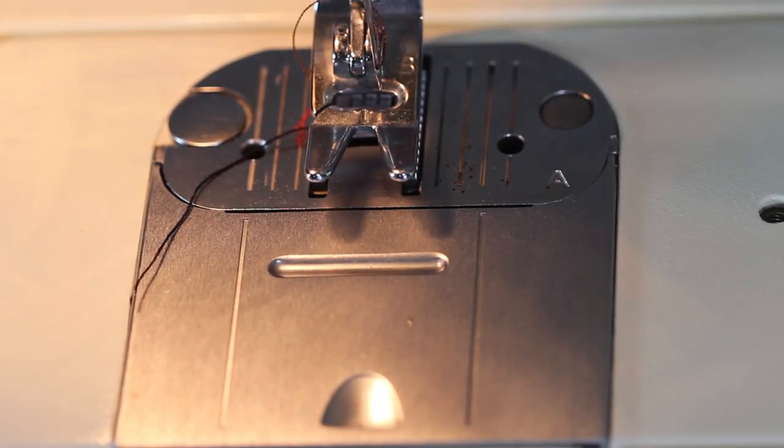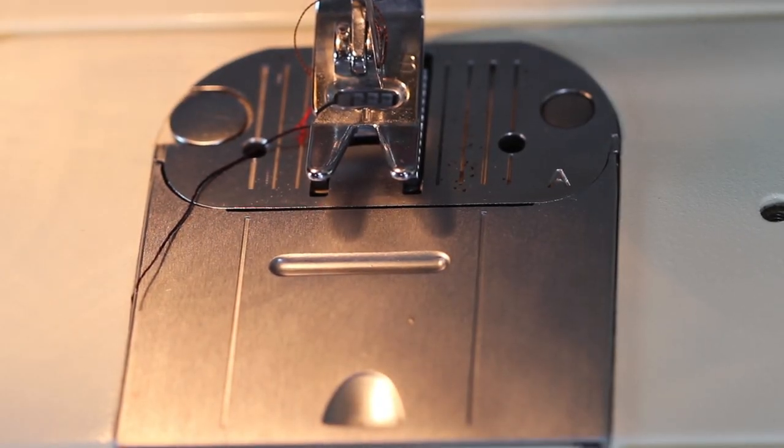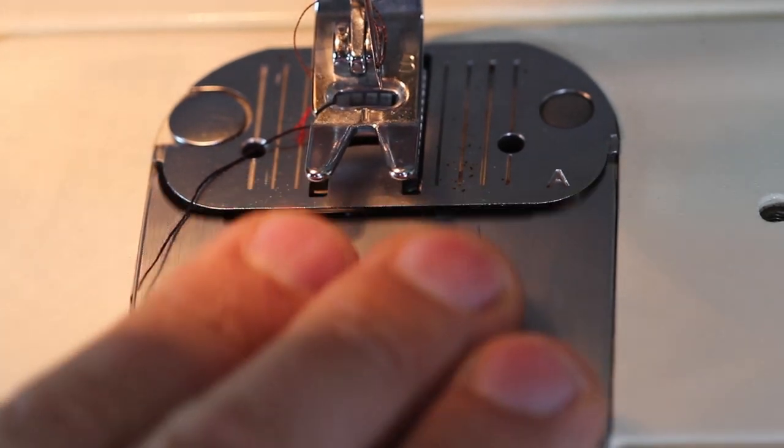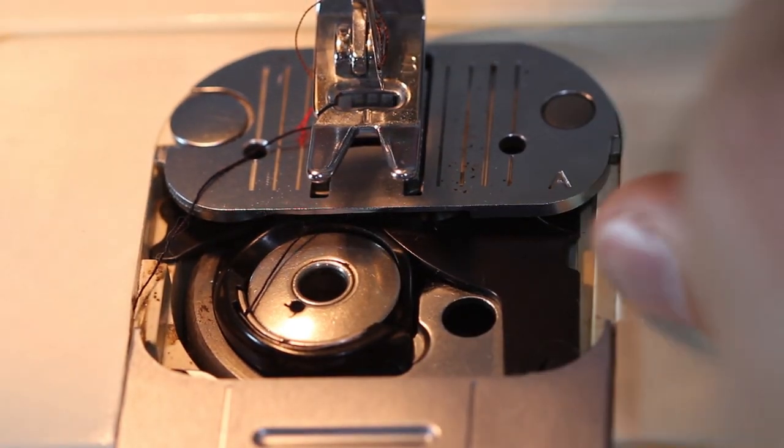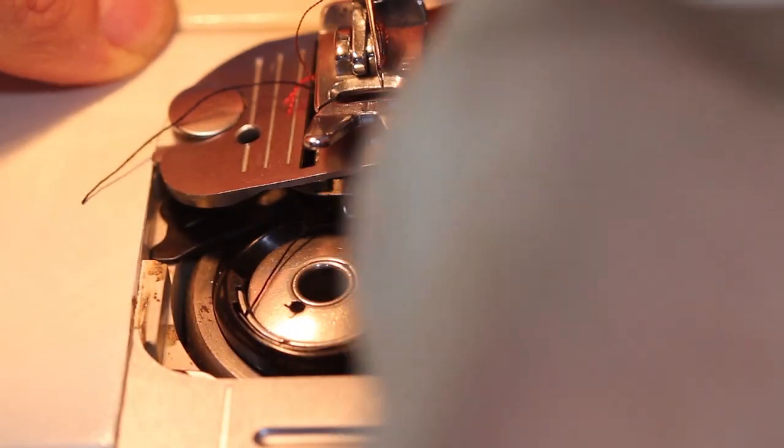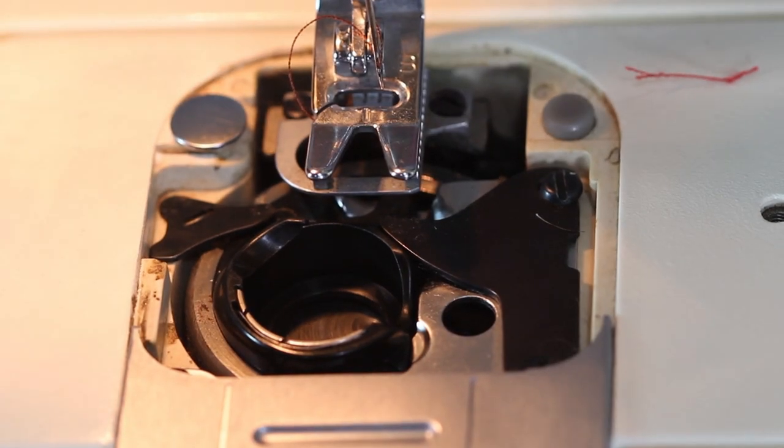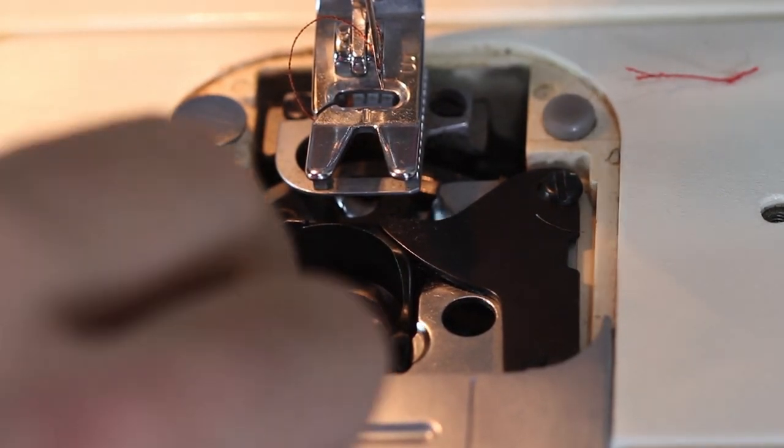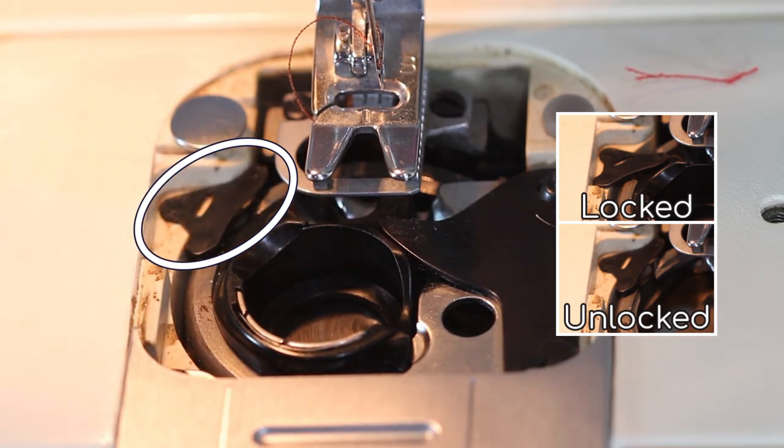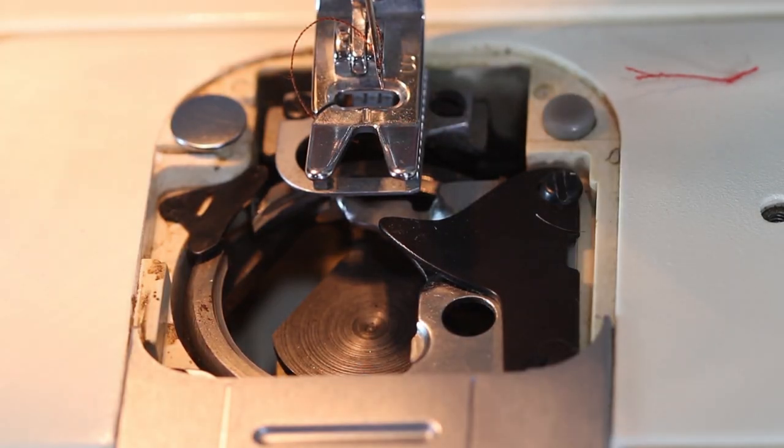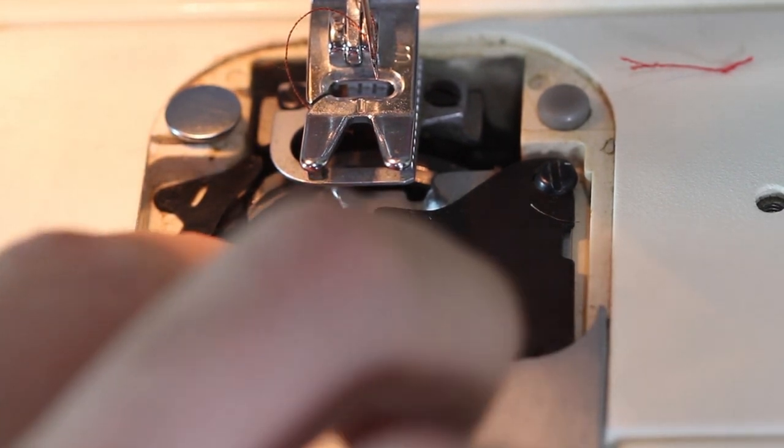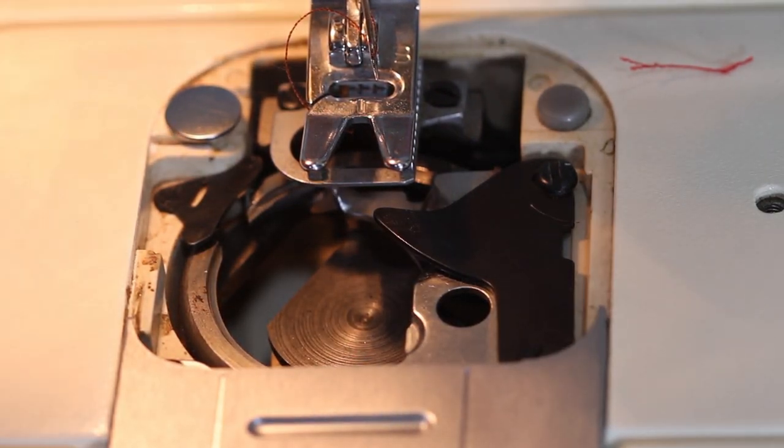He started by opening up the bobbin cover and the back cover plate. He took out the bobbin and the bobbin casing. We open up here, open up there, remove our bobbin. To remove the bobbin casing, just shift this metal piece that holds it in place. So yeah, I got that out of there.